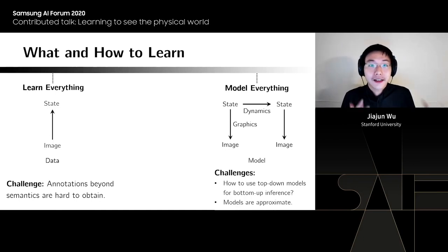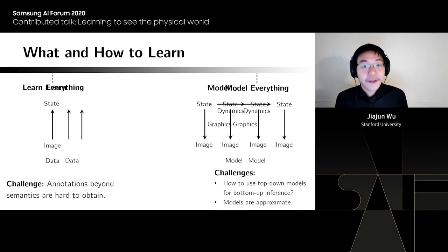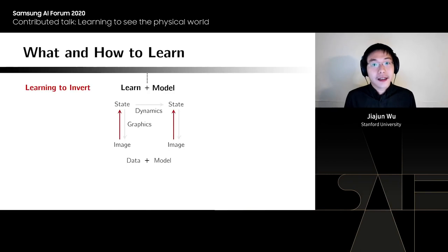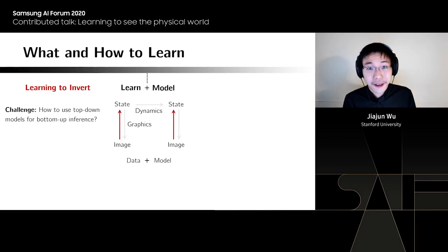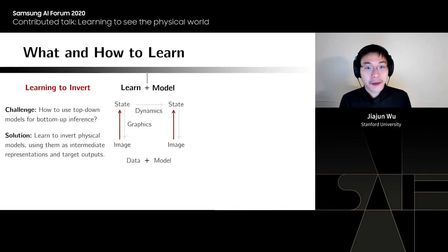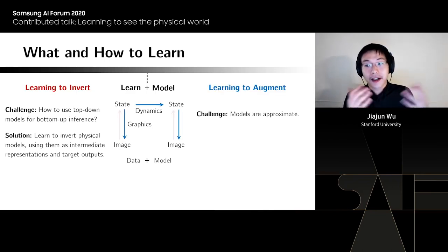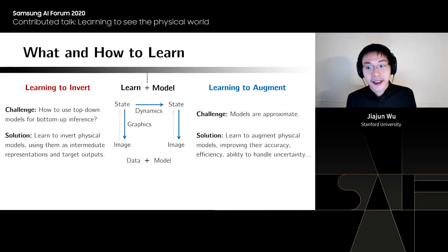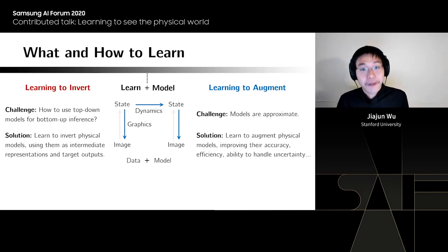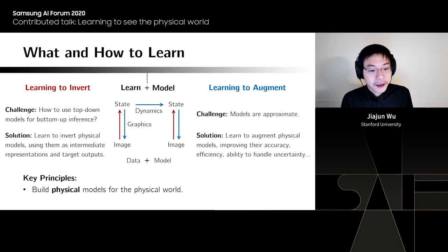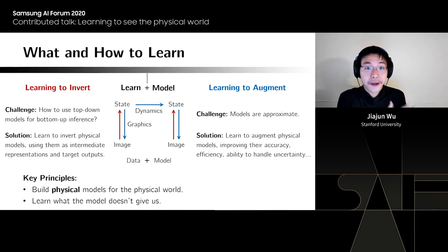Second, models are always approximate — not good enough to capture every detail of the world. So the philosophy behind my research is to integrate the two: combine learning with modeling so you get the power of both data and the model. Concretely, we have two research themes: learning to invert — using top-down models for bottom-up inference by learning to invert the physical model — and learning to augment — using learning to make approximate models more accurate, more efficient, and able to handle uncertainties.